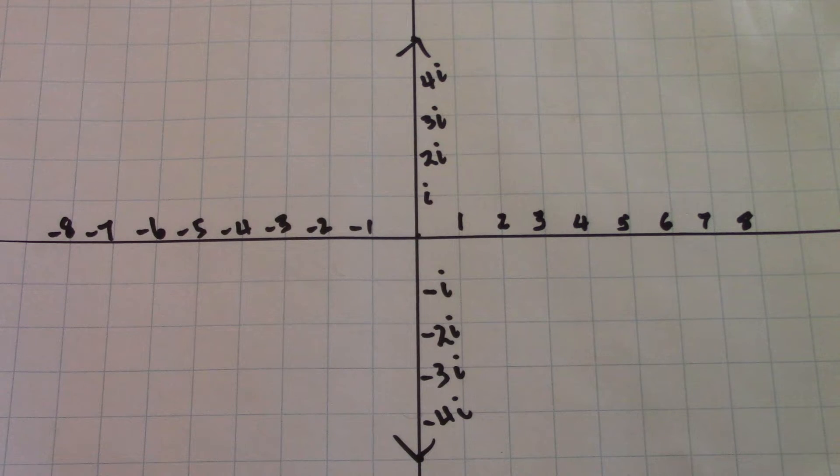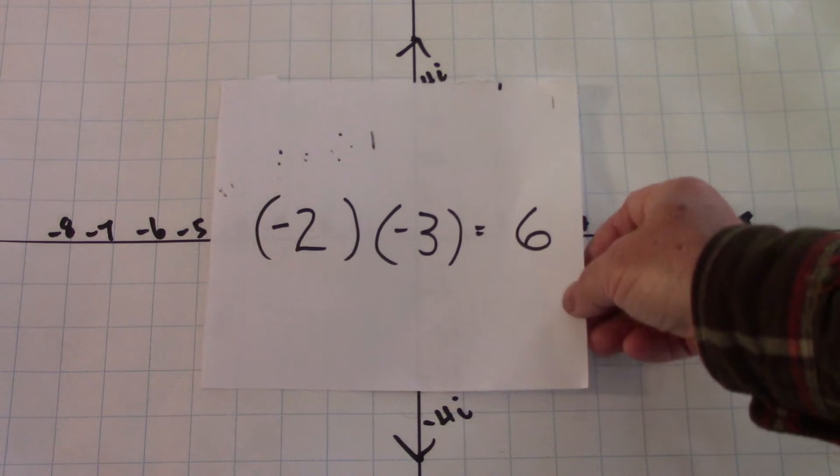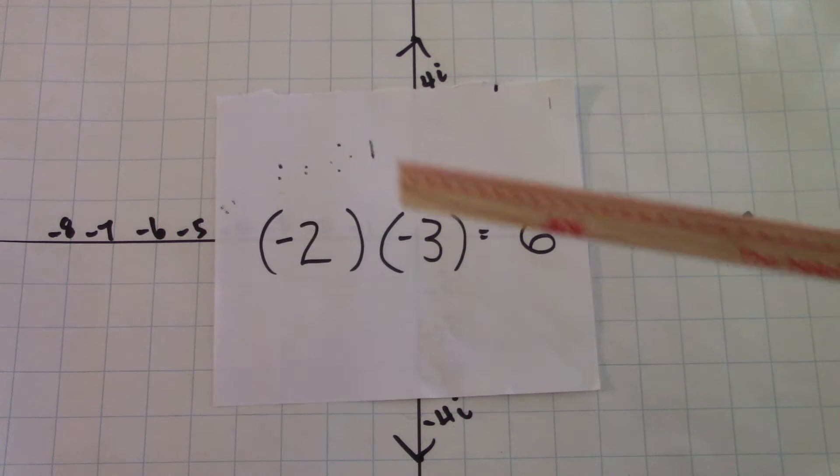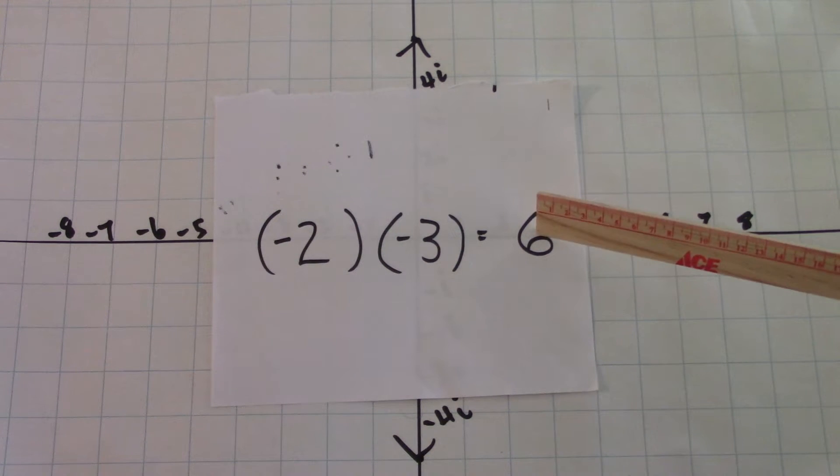Today I want to present to you my understanding of why two negative numbers multiplied gives positive. So why does minus two times minus three equal six?